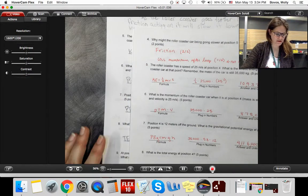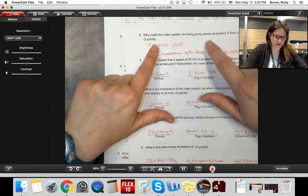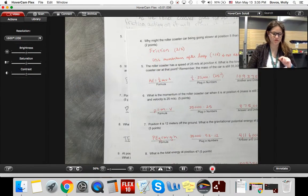Same test. This is test A. So the first question is, why might the roller coaster be going slower at position 5 than at position 2?